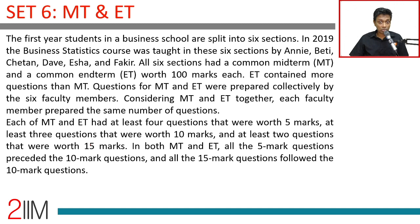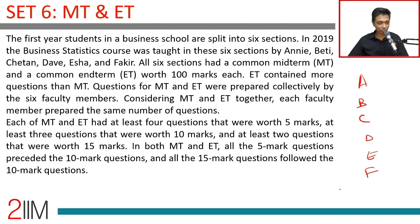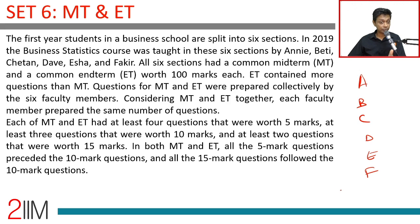The first-year students in a business school are split into six sections. In 2019, the business statistics course was taught in these sections by Annie, Betty, Chetan, Dave, Ishan, and Fakir — A, B, C, D, E, F. All six sections had a common midterm and a common end term, worth 100 marks each.